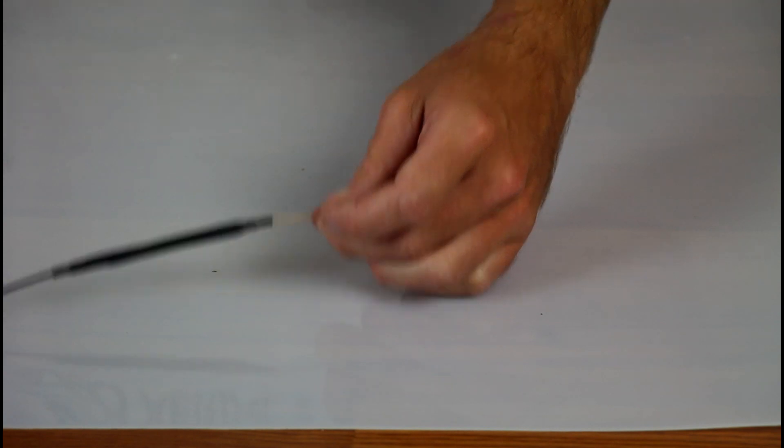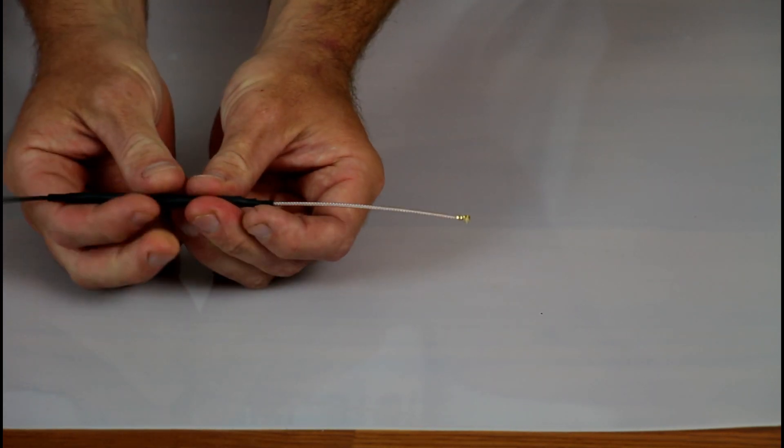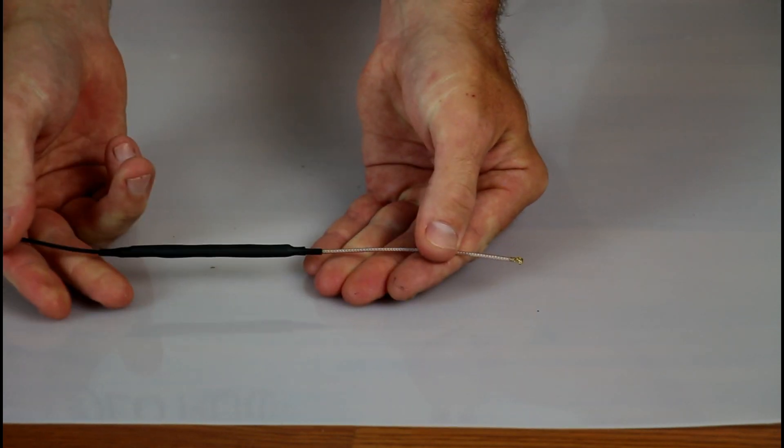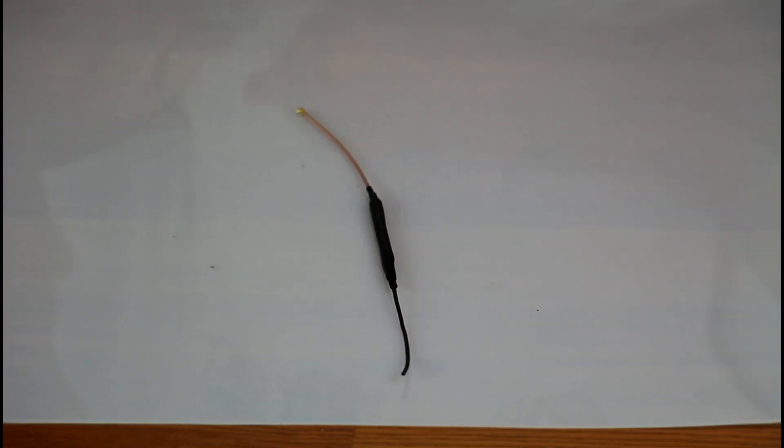When you squeeze the back end of the cable you should feel that air gap inside. It is this air gap that makes the antenna work. And there you have it. A U.FL whip style antenna for your TBS Crossfire.